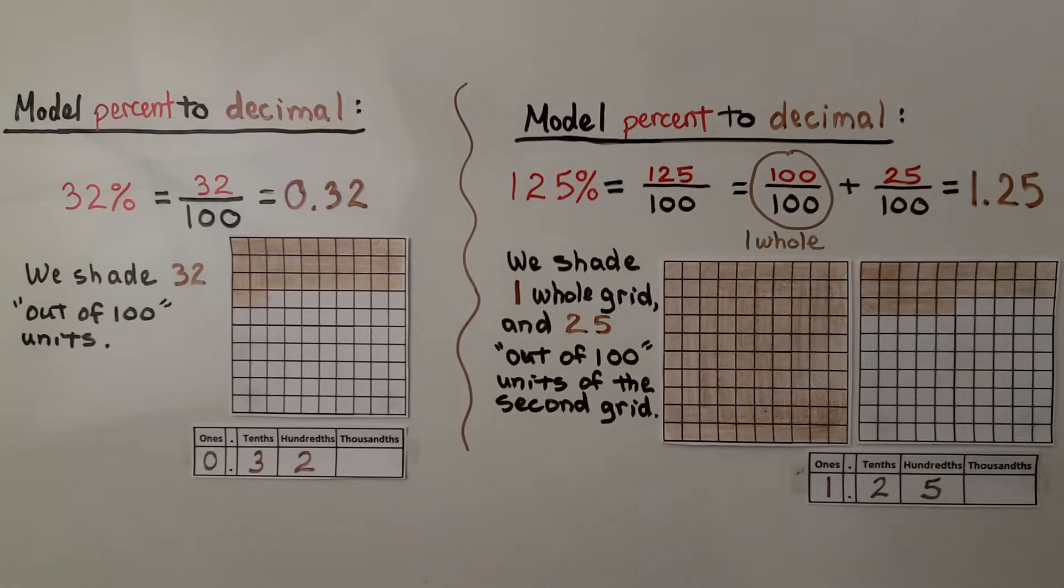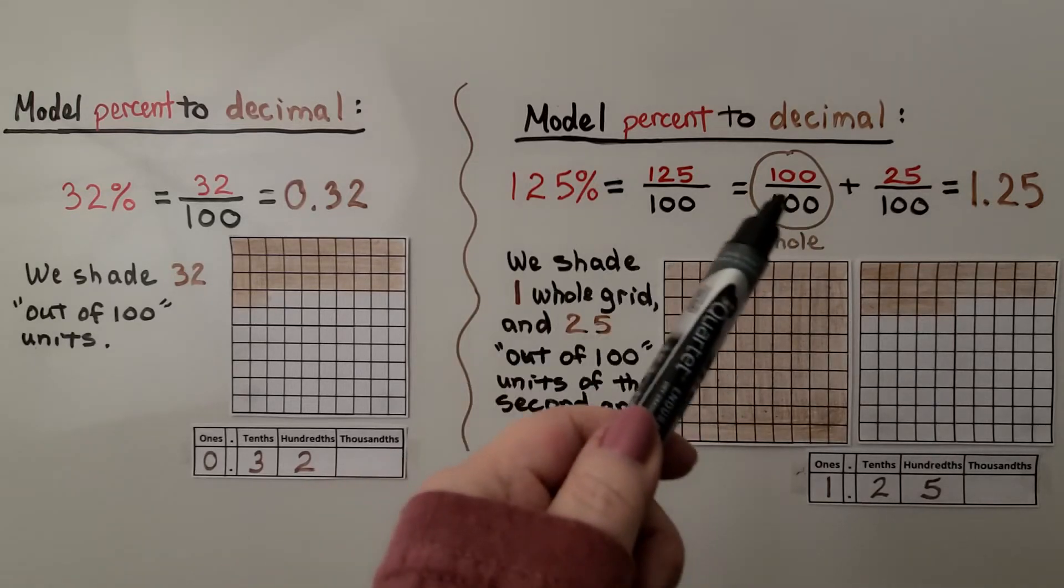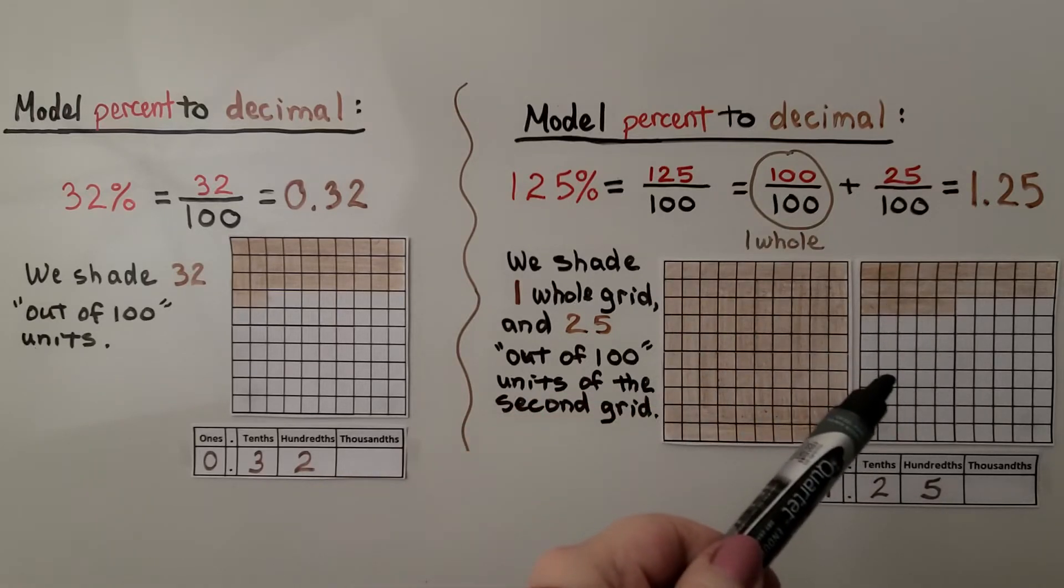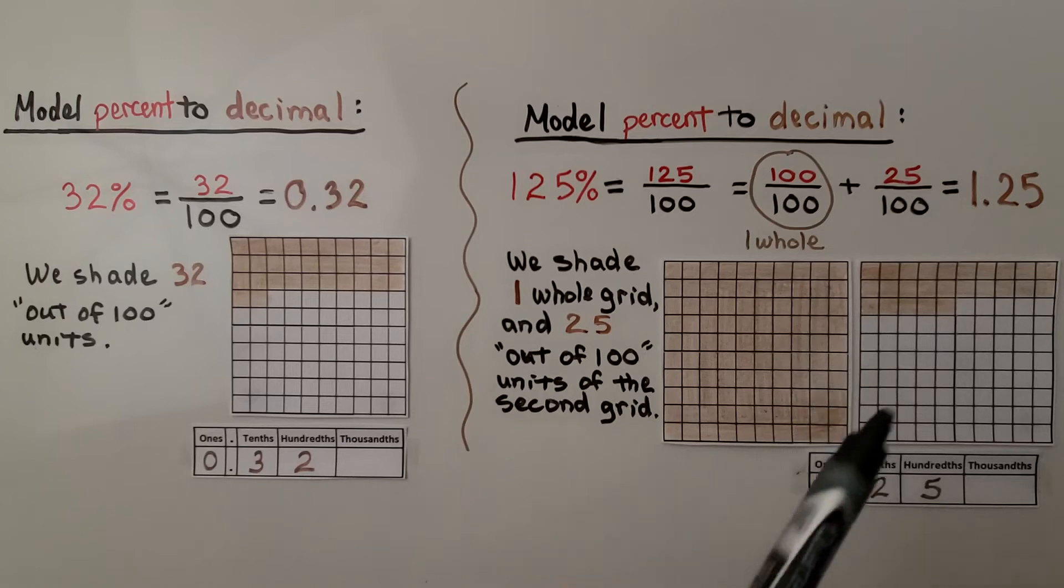Remember we read the decimal point as and. We shade one whole grid for this one whole and 25 out of 100 units of the second grid. We have 1 and 25 hundredths.